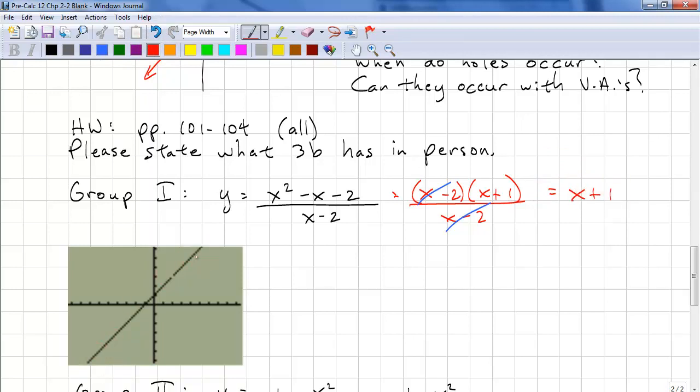This line looks like x plus 1. However, we have a hole at x minus 2 equals 0, x equals 2. Our non-permissible value is x equals 2. You should notice that the non-permissible value matches where the hole is. In this situation, we have no vertical asymptotes, no horizontal asymptotes.